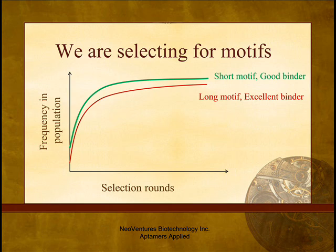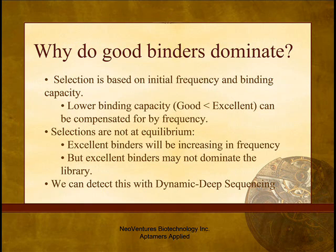This results in the identification of families of sequences that all contain the same motif. A short motif will be present initially in more sequences than a longer one. If the short motif binds to a given target, then its higher initial frequency provides a selection advantage over longer motifs that may bind even better. Both types of motifs will increase in proportion in the library over selection rounds, but the shorter motif will dominate the library before the longer one. The longer motif will, however, be increasing in proportion at a faster rate than the shorter motif.